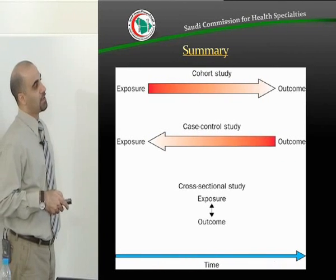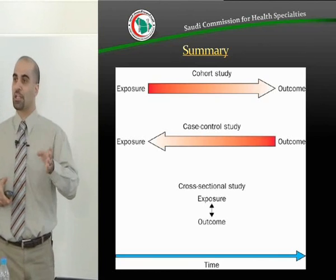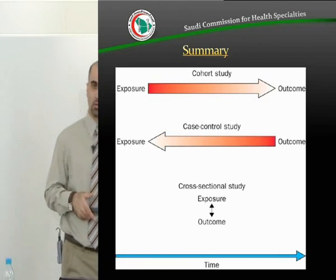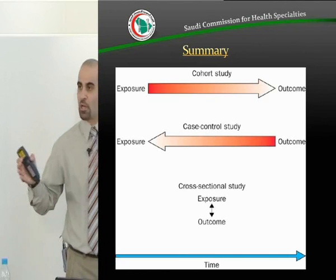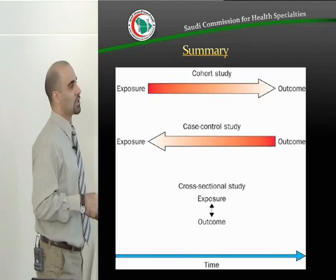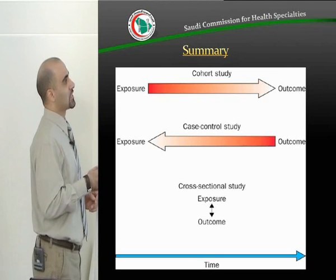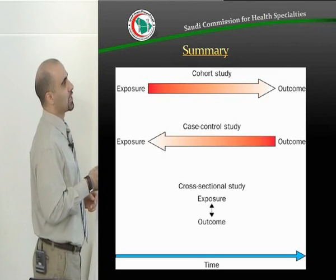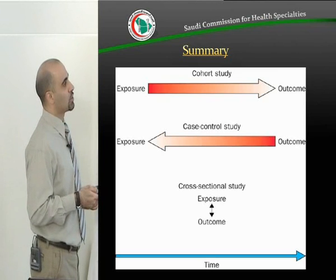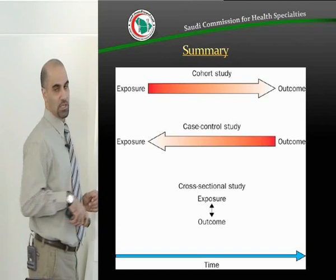In summary: a cross-sectional study measures exposure and outcome at one point in time. A cohort study starts with the exposure and goes forward to the outcome — it is prospective. A case-control study starts with the outcome and goes back to the exposure — it is retrospective.